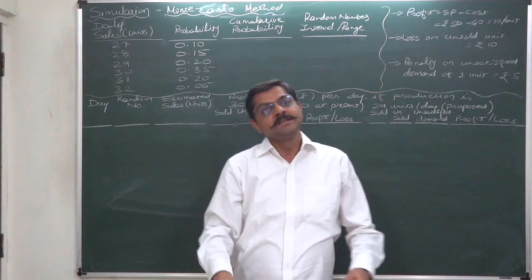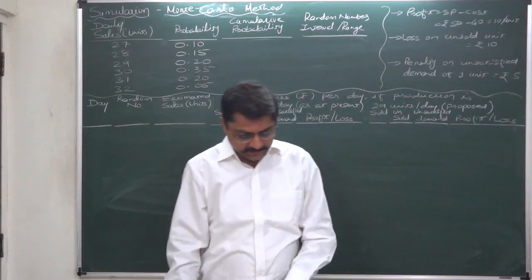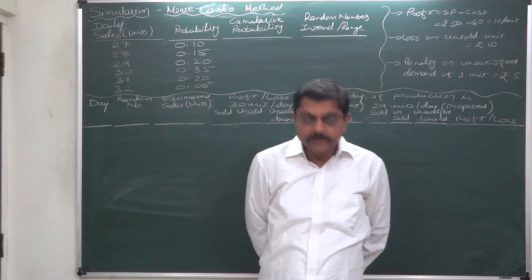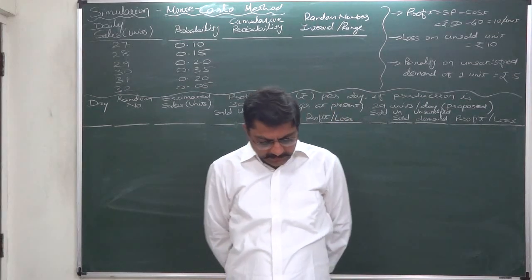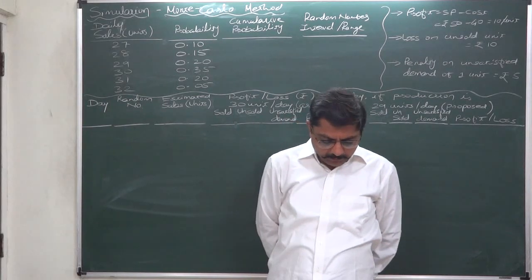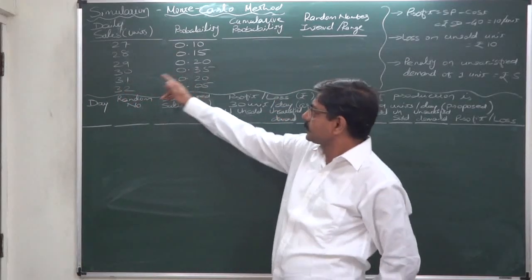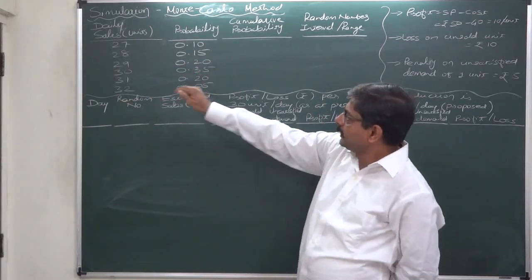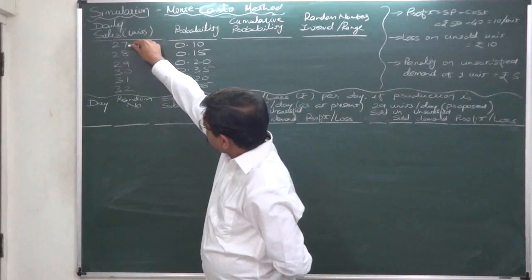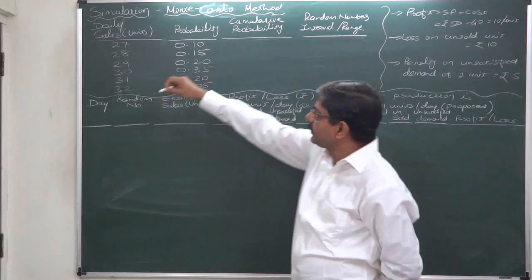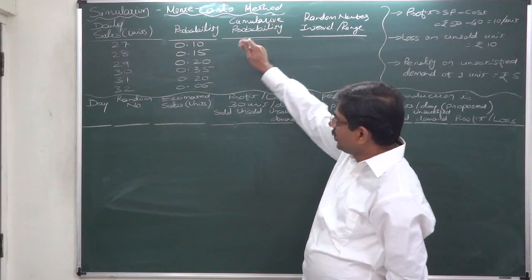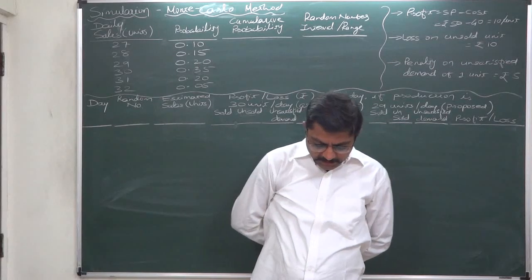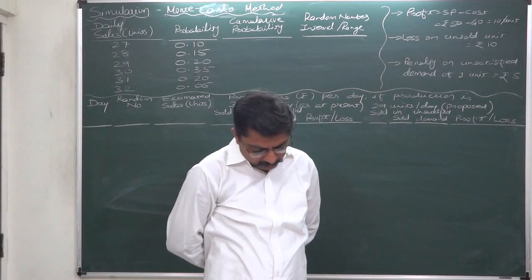Hello and welcome — simulation new case. Let's first read the problem. A company manufactures 30 units per day. The sale of these items depends upon demand, which has the following distribution. This is the probability distribution of daily demand. The demand ranges from 27 units to 32 units per day, with their respective probabilities. The production cost and sales price of each unit are rupees 40 and rupees 50 respectively.